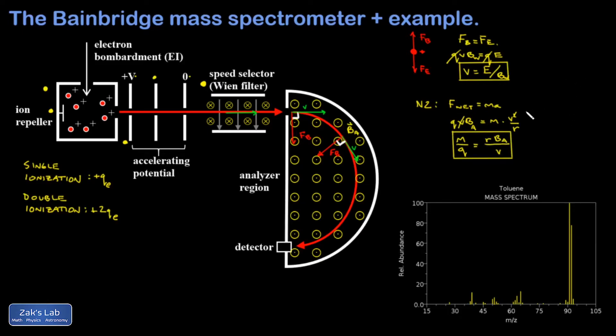It'll also be useful to think about the radius of curvature at times. So if I solve this for R instead, I get MV over QBA. Finally, the particles arrive at the detector. But what are we detecting here? Remember, this is a stream of positively charged ions. So what we're detecting at the detector is a current.